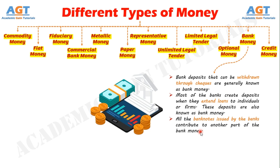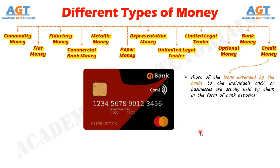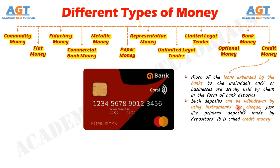Number 12: Credit Money. Most of the loans extended by the banks to individuals or businesses are usually held by them in the form of bank deposits. Such deposits can be withdrawn by using instruments like cheques, just like primary deposits made by depositors. This is called credit money.